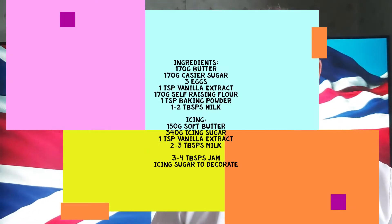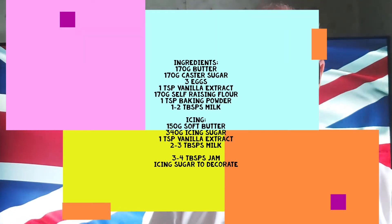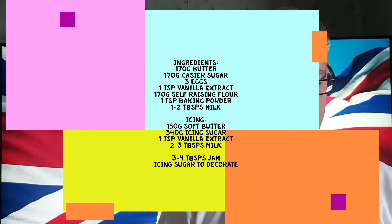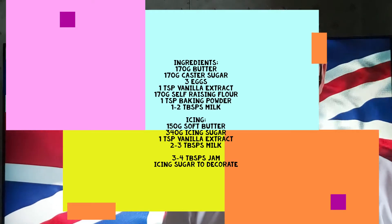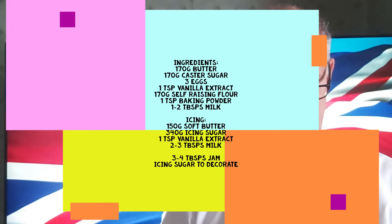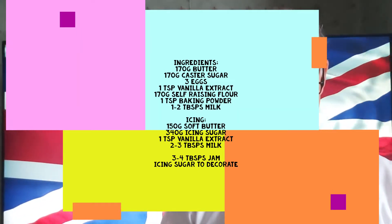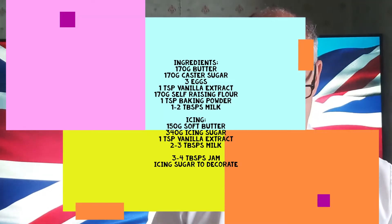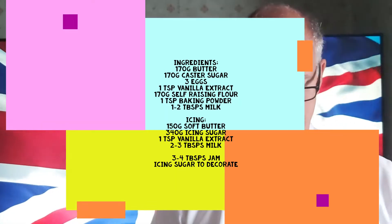The ingredients you'll need for this is 170 grams of butter, 170 grams of caster sugar, 3 eggs, 1 teaspoon of vanilla extract, 170 grams of self-raising flour, 1 teaspoon of baking powder and about 1-2 tablespoons of milk.